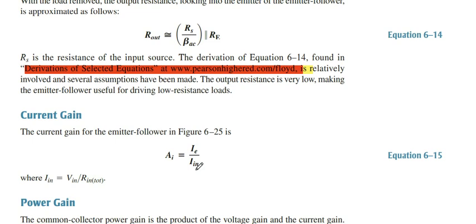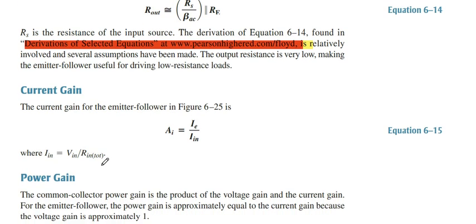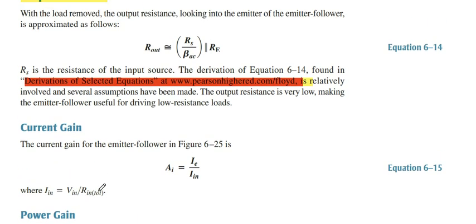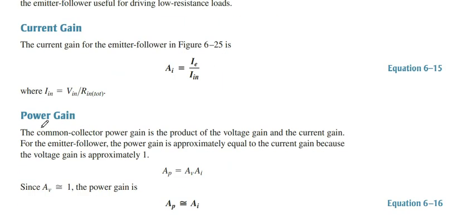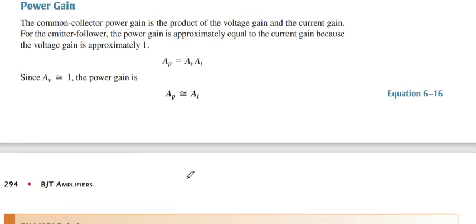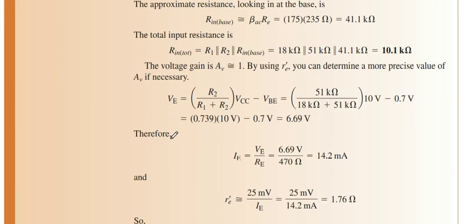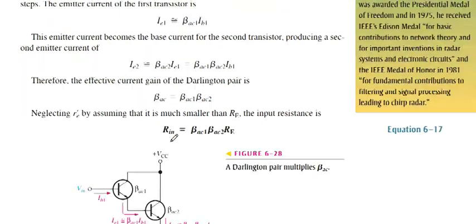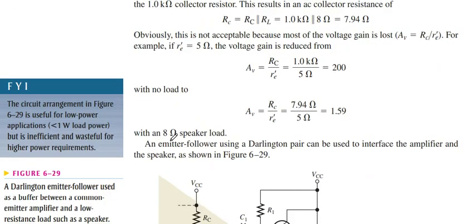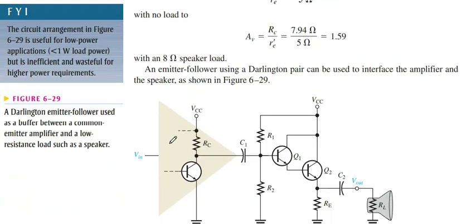Now the current gain AI is IE divided by Iin. IE is Vin over Rin total, while Rin total is represented there. On the other hand, power gain is nearly equal to the current gain because the voltage gain is equal to 1.